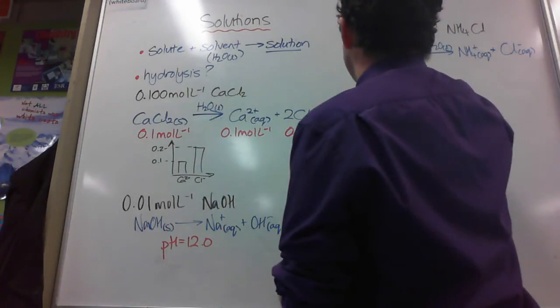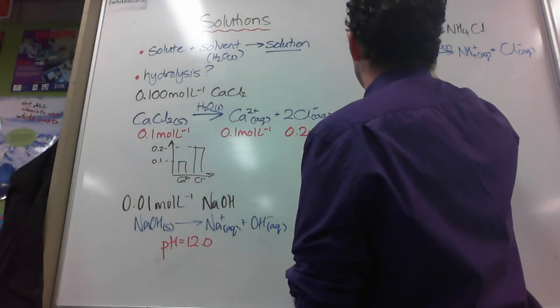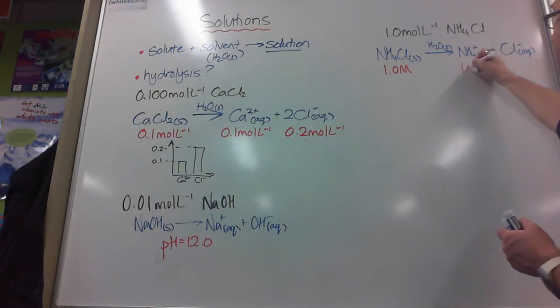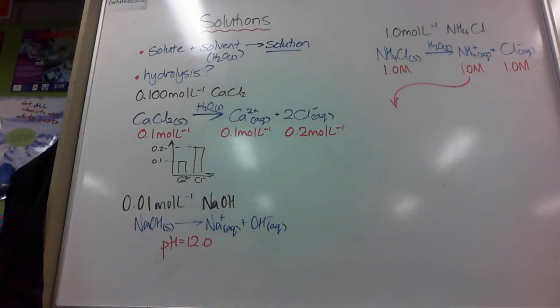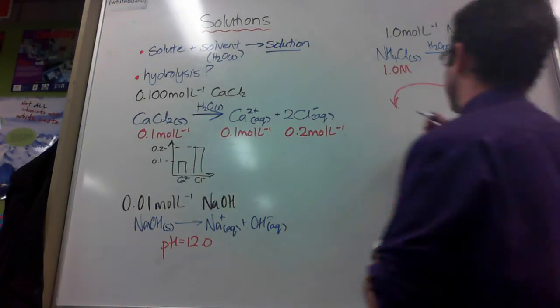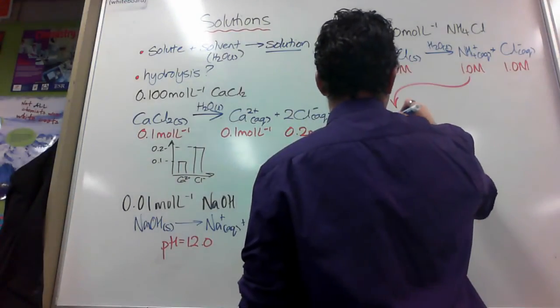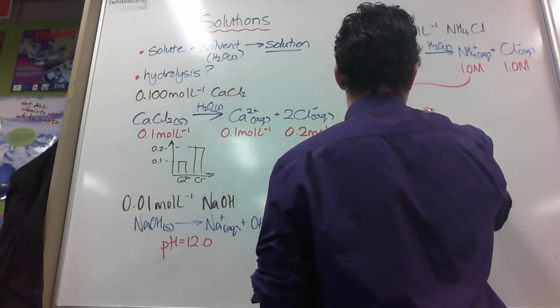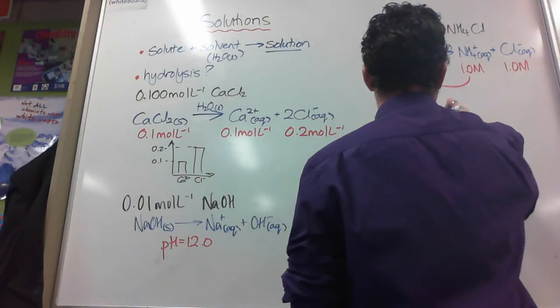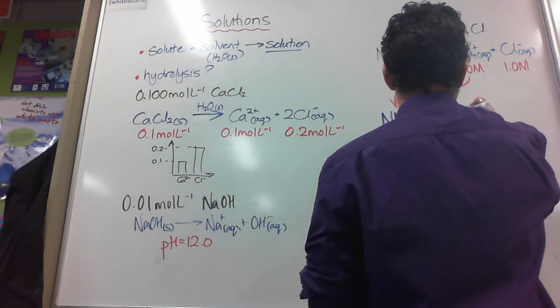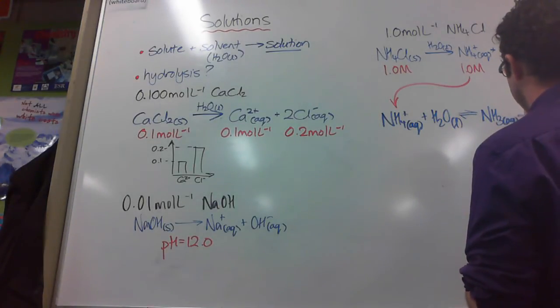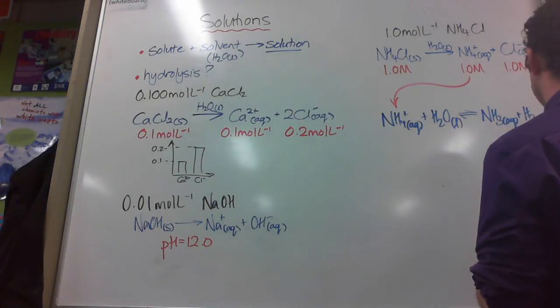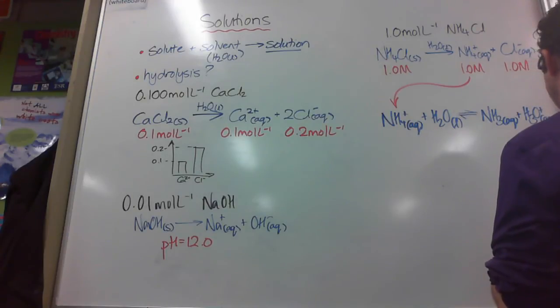The conjugates of any weak acids or bases do hydrolyze. Say that again. The conjugates of weak acids and weak bases do hydrolyze. The common ones you'll meet are ammonium and ethanoate. Ammonium will hydrolyze, so there's a bit more happening. This is one mole per litre being dissolved.